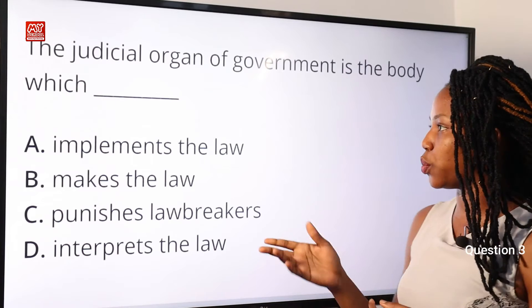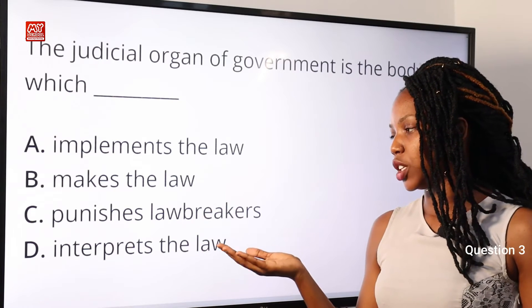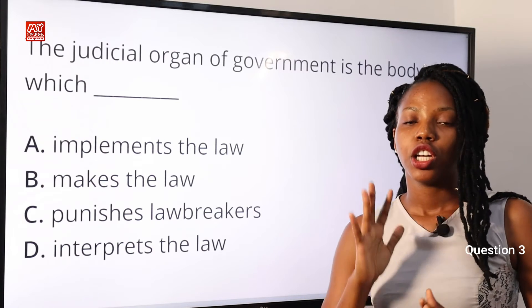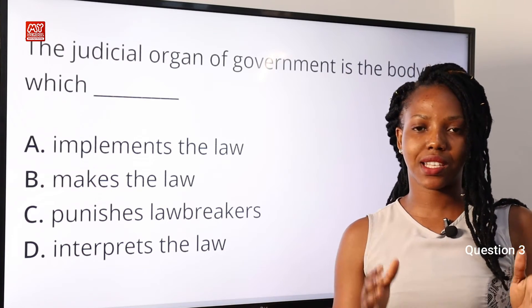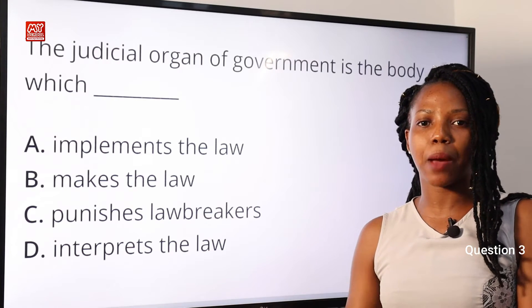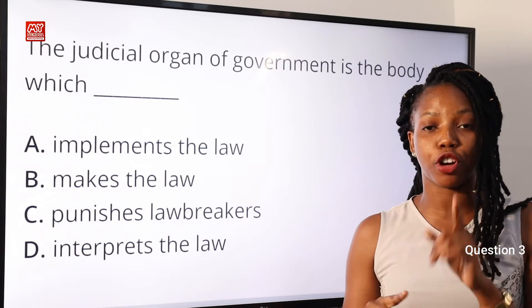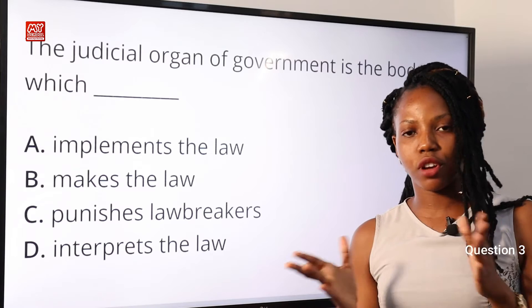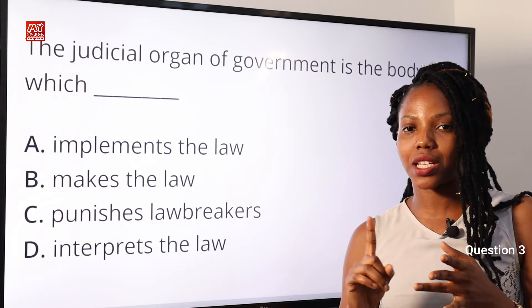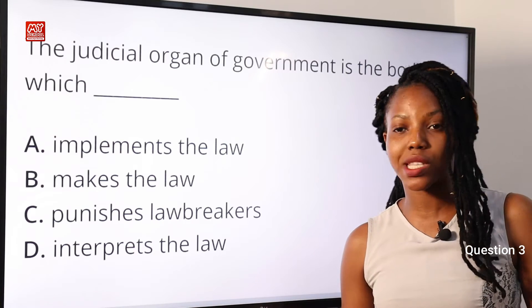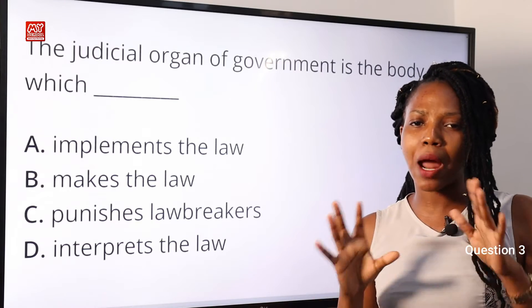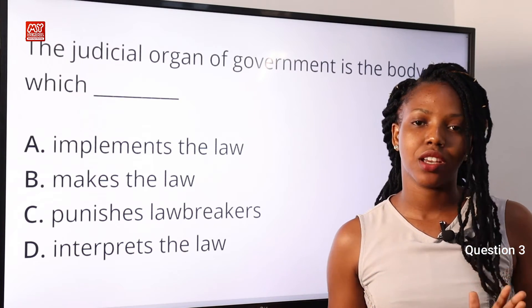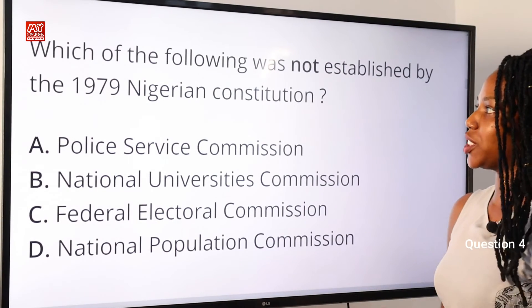Question 3: The judicial organ of government is the body which — A: implements the law; B: makes the law; C: punishes law breakers; D: interprets the law. The legislative makes laws, the executive implements the law, and the judicial interprets the law. While punishing lawbreakers is also a function of the judiciary, its primary function is to interpret the law. Option D is the correct answer.